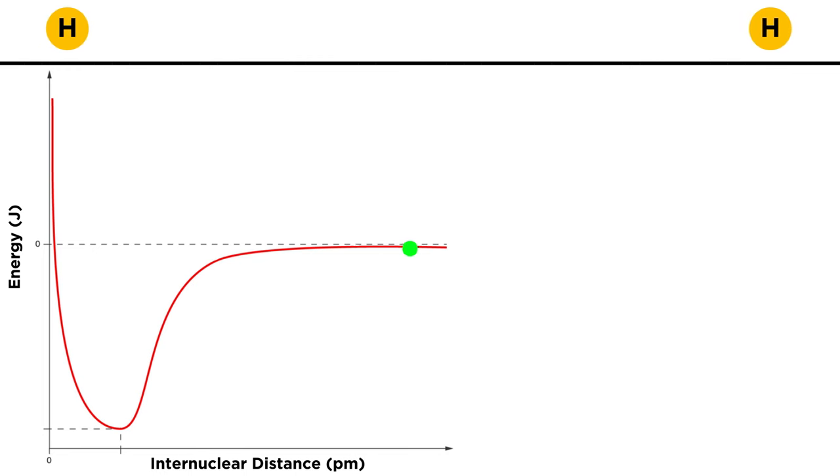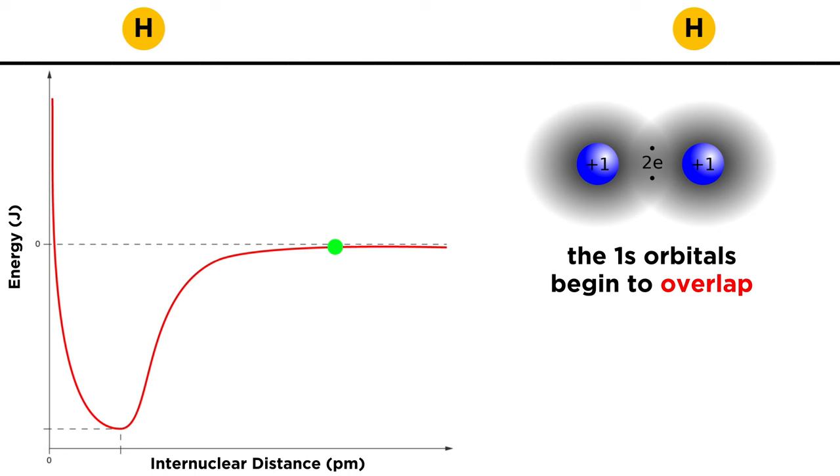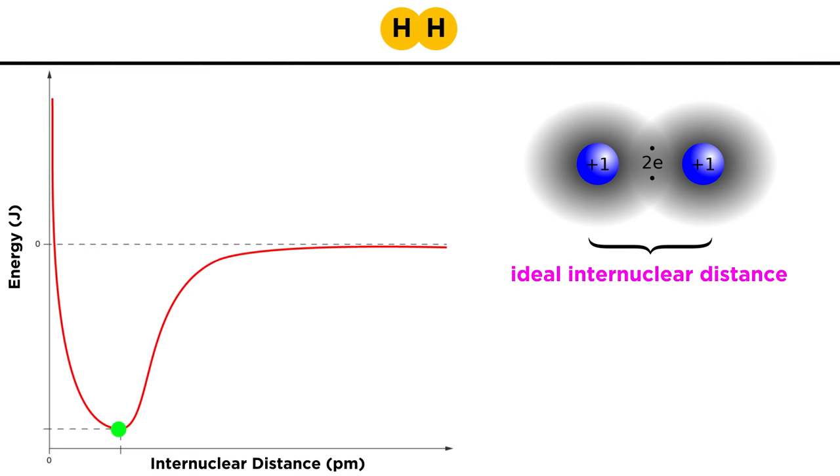Let's see what happens as they move closer together. As they approach one another, their 1s orbitals begin to overlap, allowing each electron to interact with the proton of the other hydrogen atom. As this continues, the potential energy of the system gets lower and lower until an ideal internuclear distance is found, the configuration with the lowest possible energy.